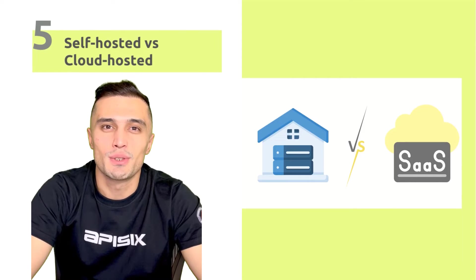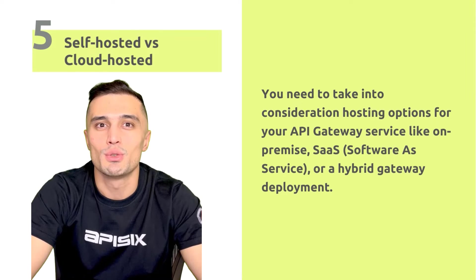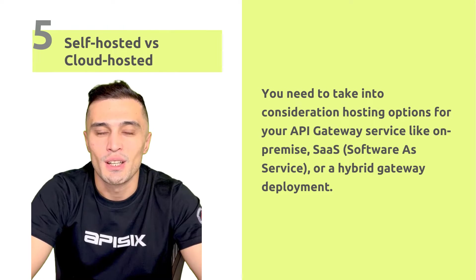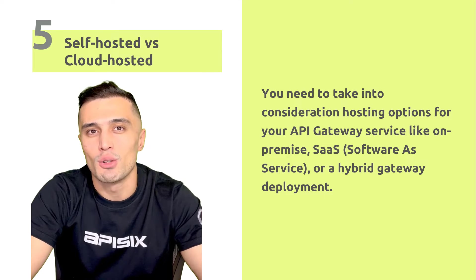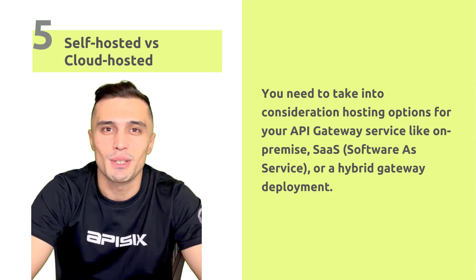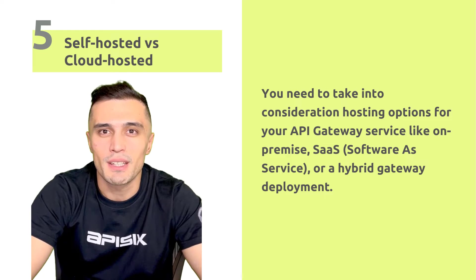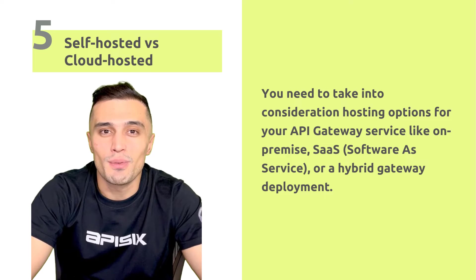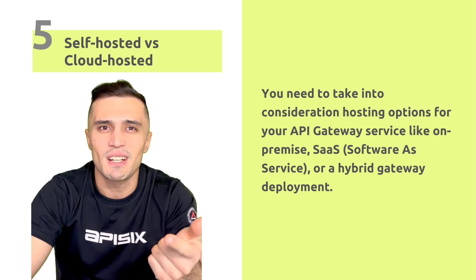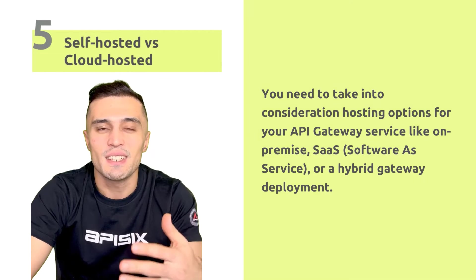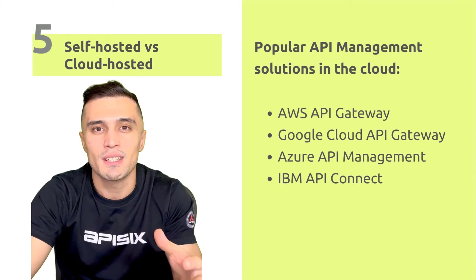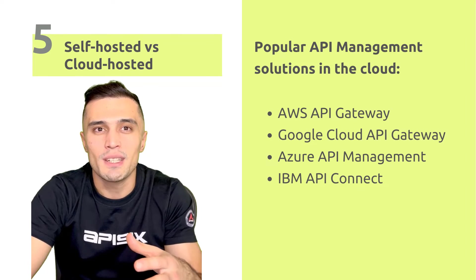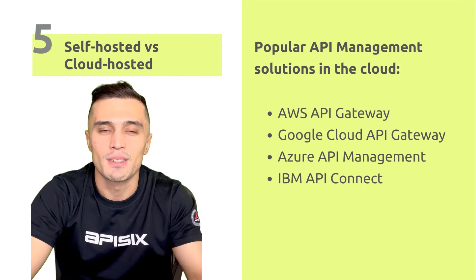Number five: consider self-hosted versus cloud-hosted options. When choosing an API Gateway, you need to take into consideration the hosting options: on-premises, SaaS (software as a service), or hybrid gateway deployment. SaaS offerings for API platforms include embedded API gateway capability, and most people use it that way because they get the benefits of a SaaS environment — availability guarantees, automatic scaling, operational security, and easy integration with other cloud provider services.